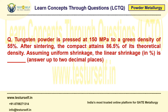Tungsten powder is pressed at 150 MPa to a green density of 55%. After sintering, the compact attains 86.5% of its theoretical density. Assuming uniform shrinkage, the linear shrinkage in percentage is — answer up to two decimal places.